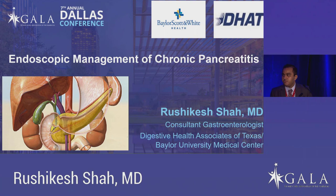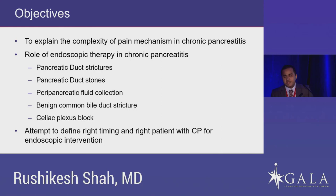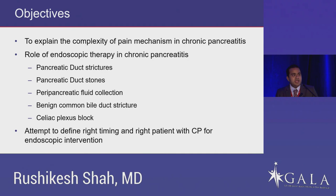My objectives today are to explain the complexity of pain mechanism in chronic pancreatitis, describe the role of endoscopic therapy in chronic pancreatitis — including pancreatic duct strictures, stones, peripancreatic fluid collections, benign common biliary strictures, and celiac plexus block — and finally to define the right timing and right patient to offer endoscopic intervention in chronic pancreatitis.